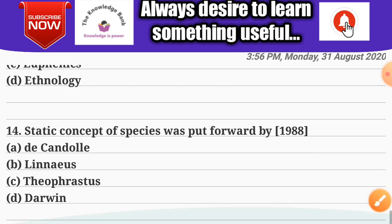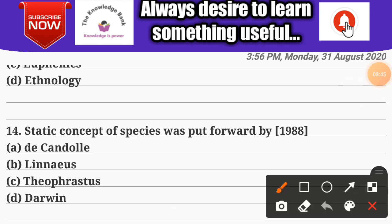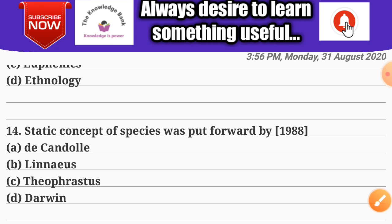Question number fourteen: the static concept of species was put forward by — Options: A) de Candolle; B) Linnaeus; C) Theophrastus; D) Darwin. The correct answer is B — Linnaeus. He put forward the static concept of species. I hope you loved this video — please like, subscribe, and share with others. Have a good day!